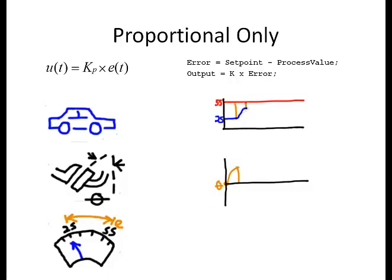On the next scan, since the car is moving at a faster speed, the error is now considerably smaller. Since the error is smaller, when it is multiplied by the gain, the output decreases, causing the foot to lift off the gas. This, in turn, causes the car to slow down, which again increases the error. If the gain is too large, this oscillation will continue to grow with the pedals slamming down and releasing. Any control loop can be made unstable if the gain is too large — but tuning, finding the right gain, is another topic.